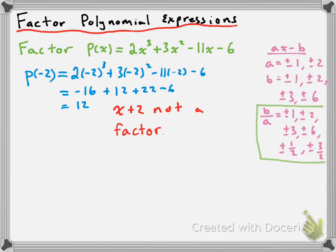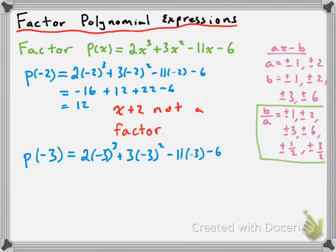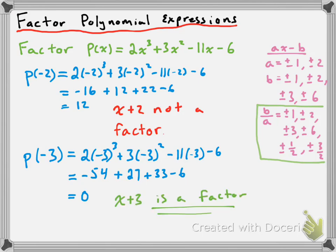Let's try −3. We check p(−3): 2(−3)³ + 3(−3)² − 11(−3) − 6, which simplifies to −54 + 27 + 33 − 6, giving us 0. Since we got 0, that means (x + 3) is a factor of 2x³ + 3x² − 11x − 6.